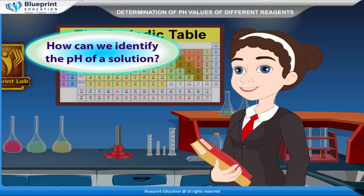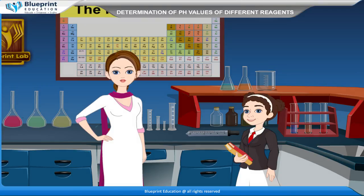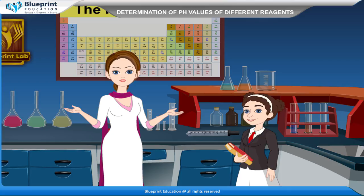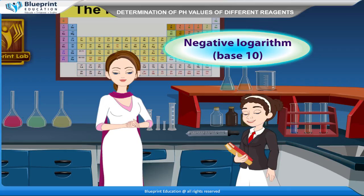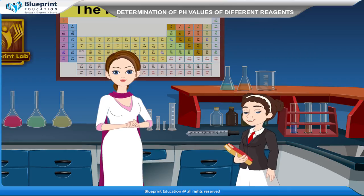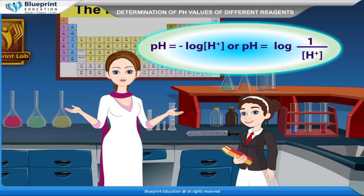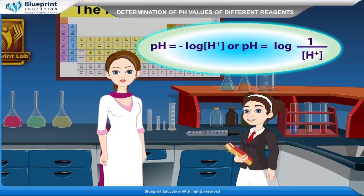How can we identify the pH of a solution? The acidic or basic property of substances is measured in terms of pH. It is a measurement of the hydrogen ion concentration. pH is defined as the negative logarithm base 10 of hydrogen ion concentration: pH = −log[H⁺], or equivalently, pH = log(1/[H⁺]).